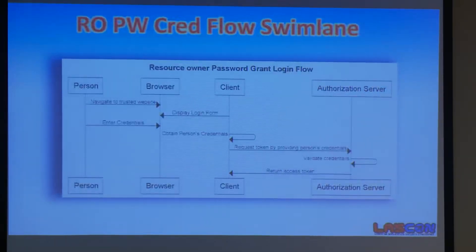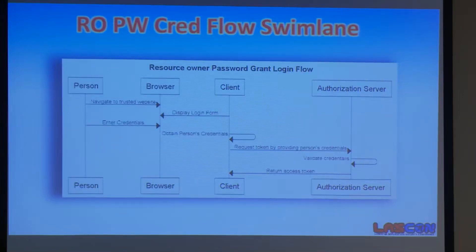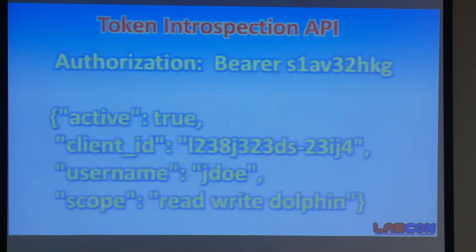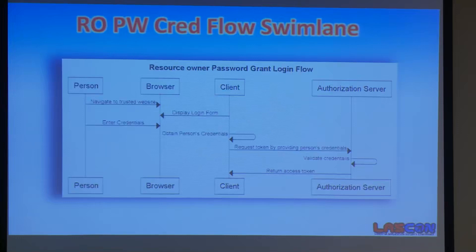OAuth also defines the resource owner password credential flow. In this case, the client actually takes the password of the person, submits it to the resource server, and gets back a token. If you're thinking 'isn't that what we were trying to prevent in the first place?' — the answer is yes. So don't use that flow. In order to use it you have to trust the client, and I don't even know why it's there, but it's there.